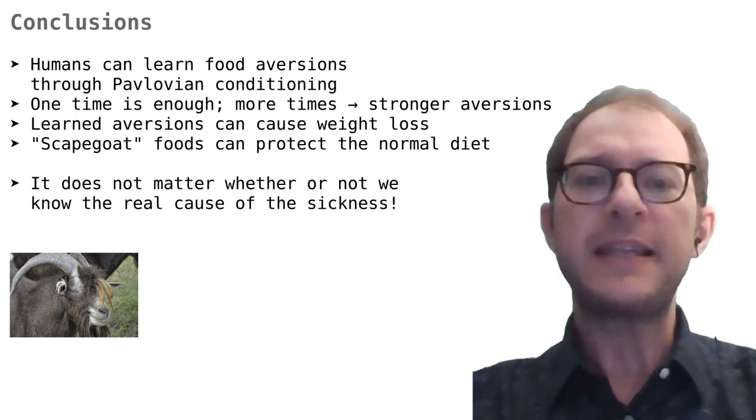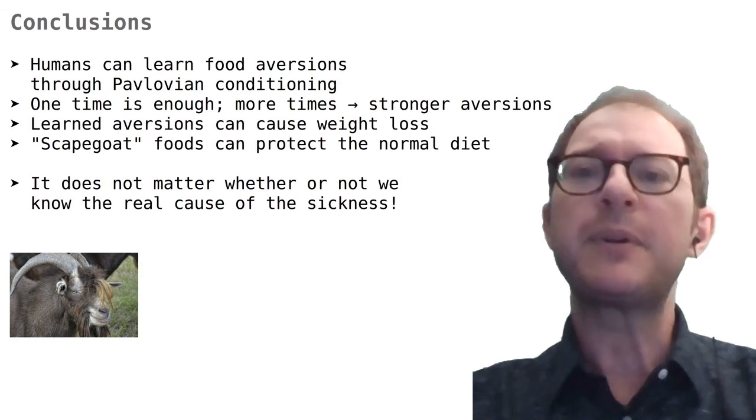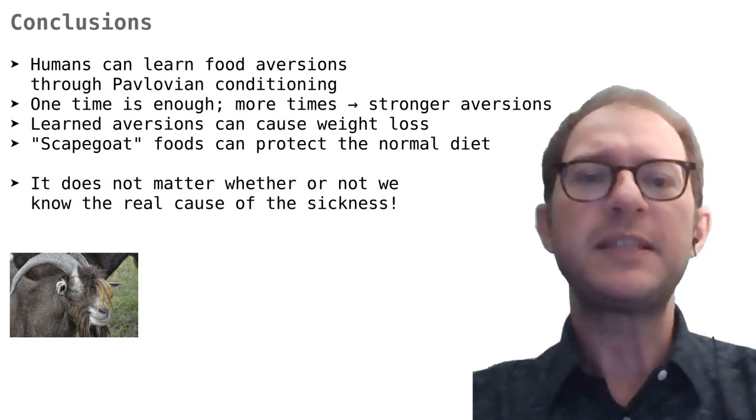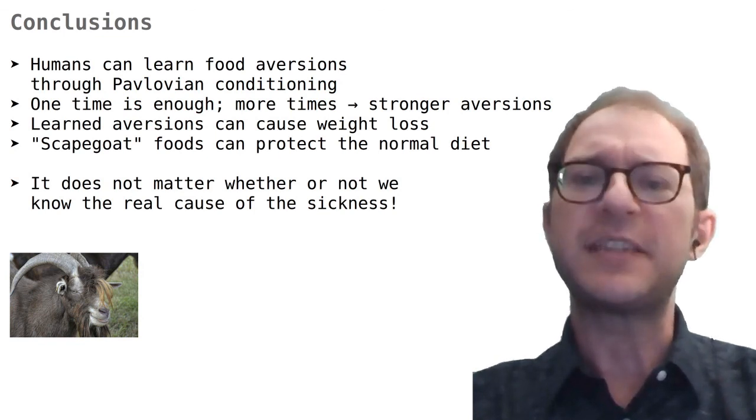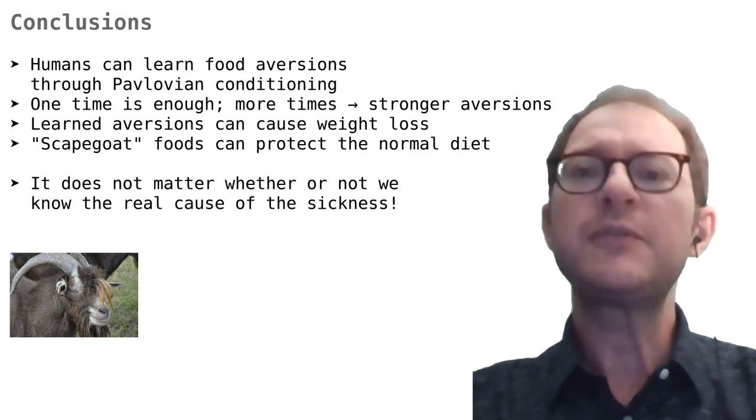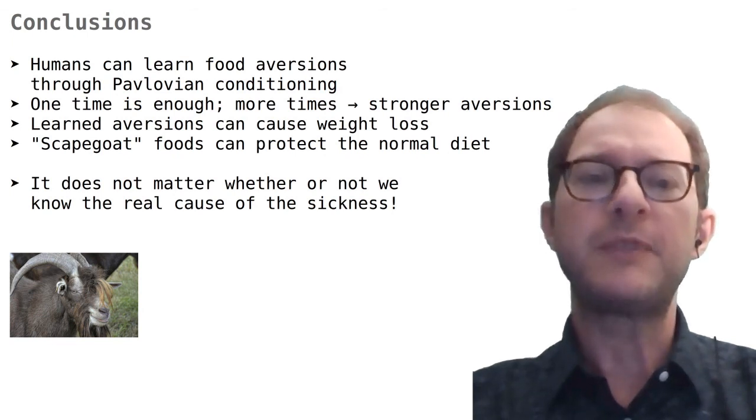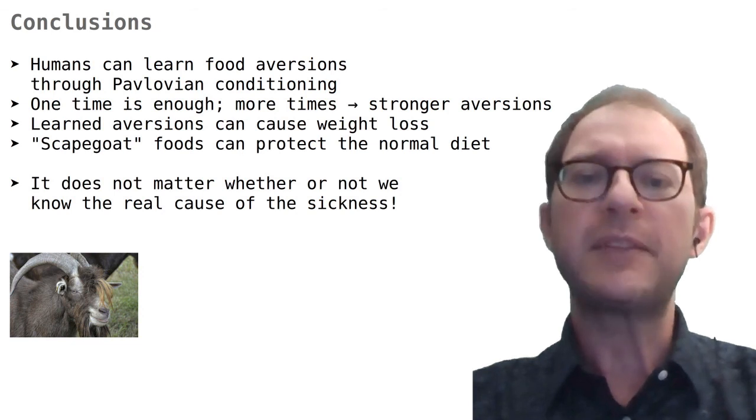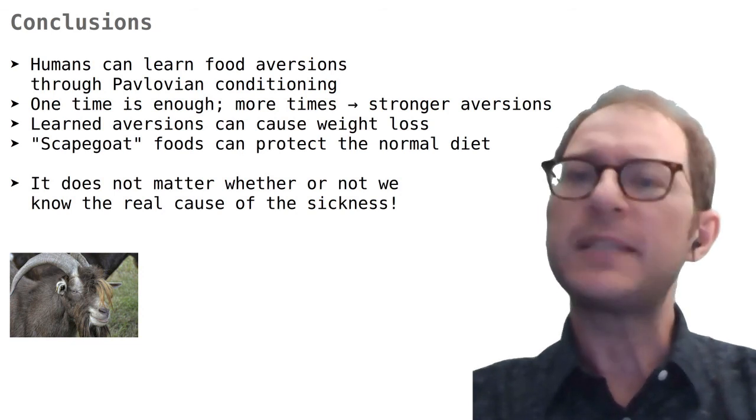This last finding suggested to Bernstein the idea of using scapegoat foods, that is, a food that is distinctively flavored but not essential, like candy. This food could be given to the patient before the sickness-inducing drug to protect the patient's diet from conditioned aversion. This idea has been tried with some success.